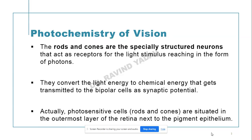To start with, rods and cones — as we have seen in the 10 layers of the retina — are special structural neurons acting as receptors for the light stimulus, which reaches in the form of photons. They convert light energy into chemical energy, and it is transmitted to the bipolar cells as a synaptic potential.